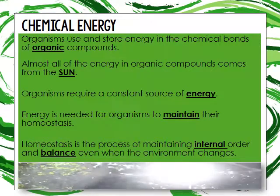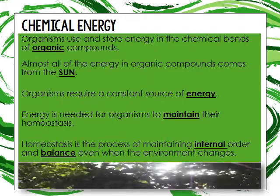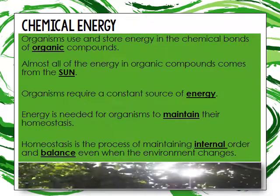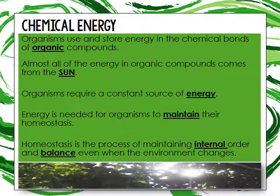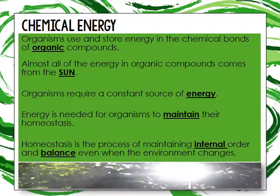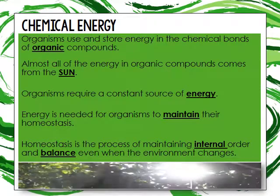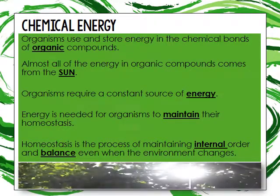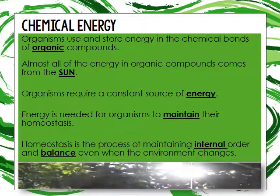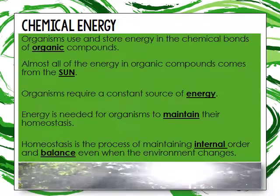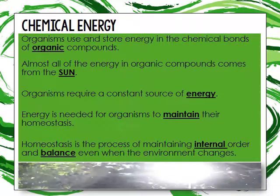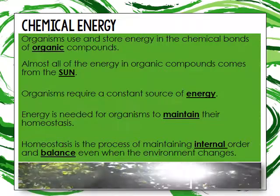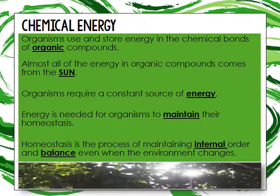Organisms need energy to maintain homeostasis — the process of maintaining your internal order and balance whenever the environment changes. If you are a warm-blooded organism like we are, you have to maintain a constant temperature. If you're cold-blooded like a snake, you become the temperature of the environment. We also have to maintain the pH of our blood — this is all homeostasis.